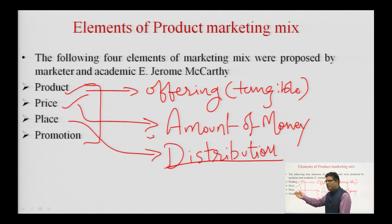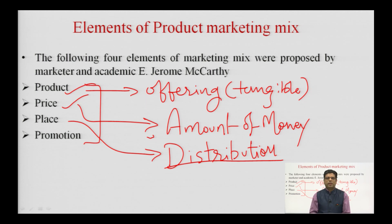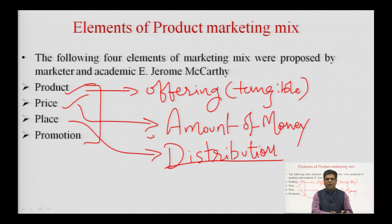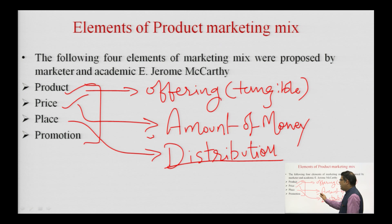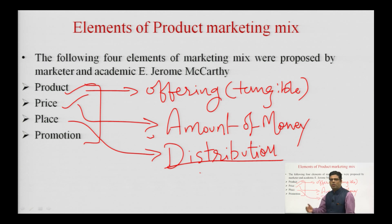Place means the location at which the consumer gets the product for use. It can be an online store, an offline store, the nearest Kirana shop, a specialty store in a mall, or cash on delivery. Place relates to the manner in which the consumer obtains the product — how a product finally reaches the consumer is distribution, and the location at which the consumer gets it is the place.